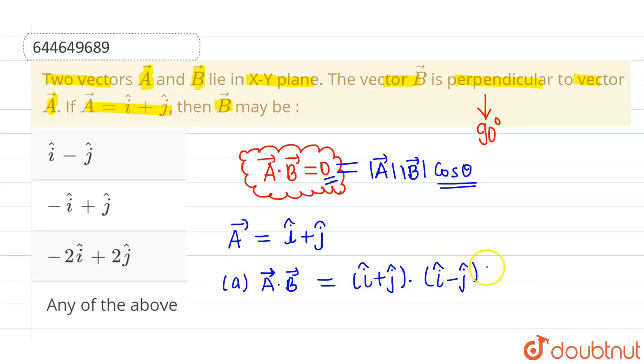So we know that i dot i and j dot j and k dot k are one, and the dot product of i with any vector except itself will be zero. So from here, I will be getting dot product as one minus one which can be written as zero. So option first is correct.